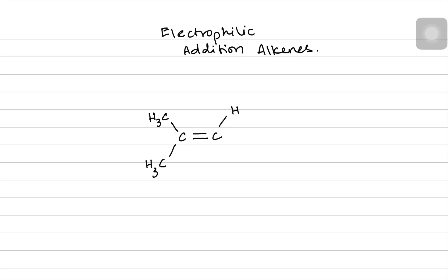When we name it, we obviously number the carbon atoms. Starting from the double bond: carbon 1, carbon 2, and carbon 3 — so this becomes our longest chain. There's a methyl group on carbon 2, so the name of this compound turns out to be 2-methylprop-1-ene. It's an asymmetrical alkene because you can see that both carbons of the double bond have different alkyl groups. Let's highlight them in red and yellow because we're going to focus on those.